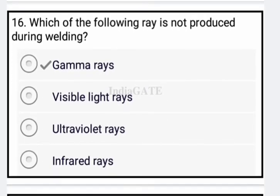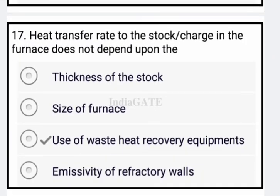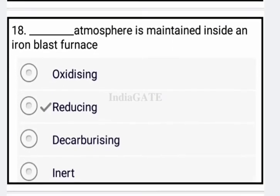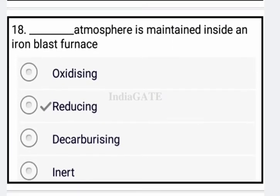Next question: which of the following rays is not produced during welding? Gamma rays are not produced during welding. Next: heat transfer rate to the stock charge in the furnace does not depend upon the use of waste heat recovery equipment — option C is correct.